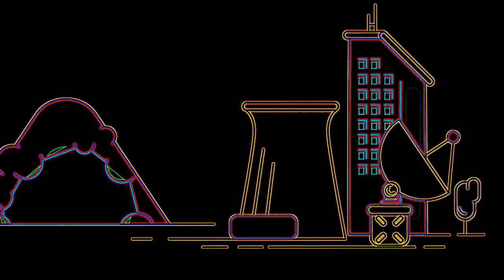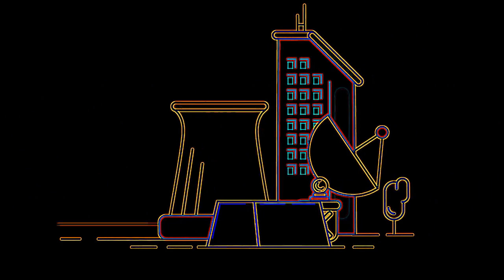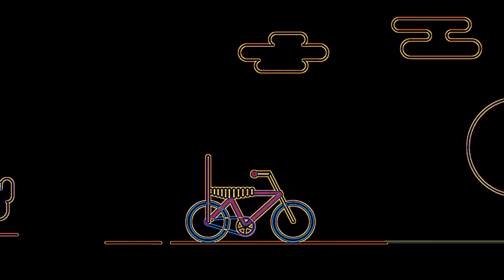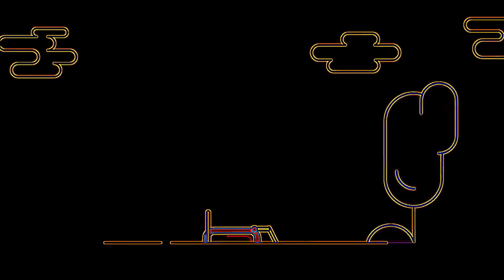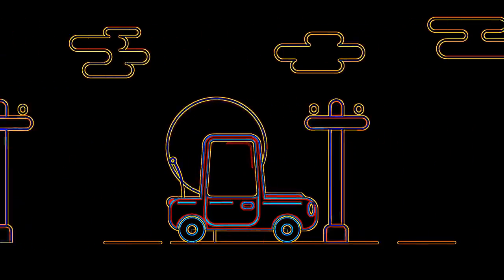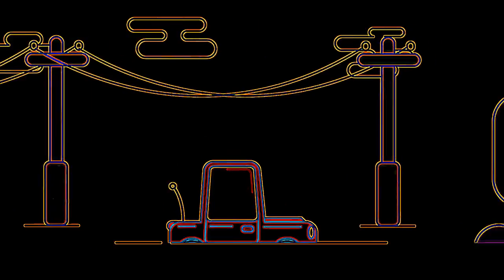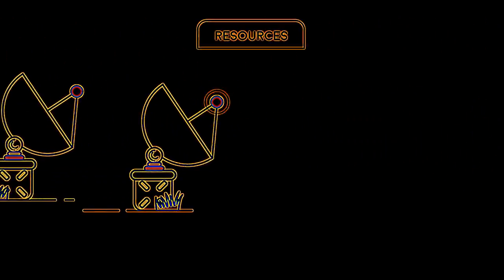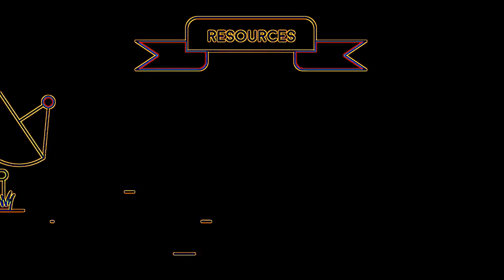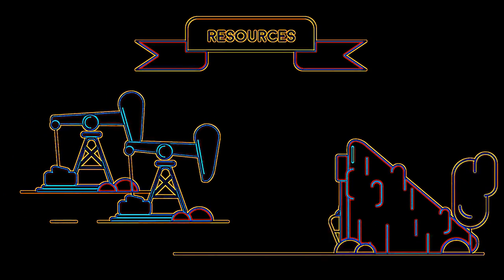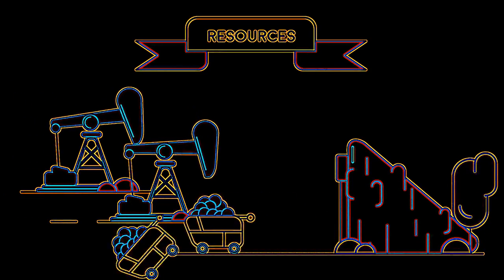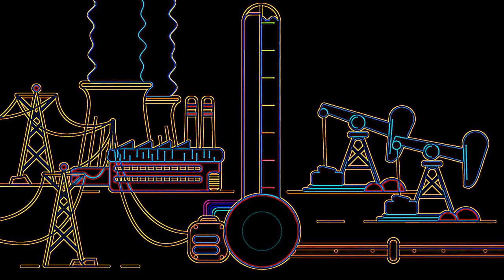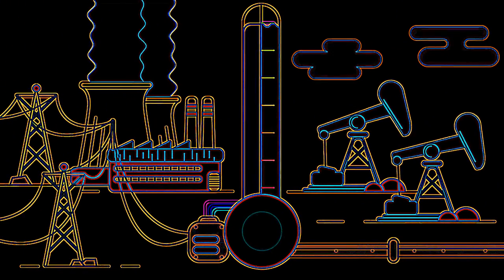But as the human race has developed, we now have a need for other, more luxurious items — maybe a bicycle or a car to get us from A to B, electricity, even the internet. All these things require resources — lots and lots of resources such as fossil fuels and metals.